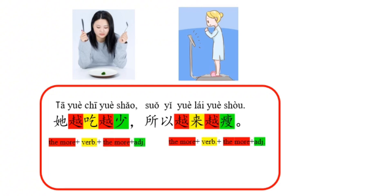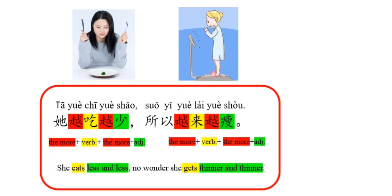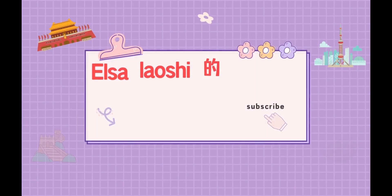她越吃越少，所以越来越瘦。She eats less and less, no wonder she gets thinner and thinner.